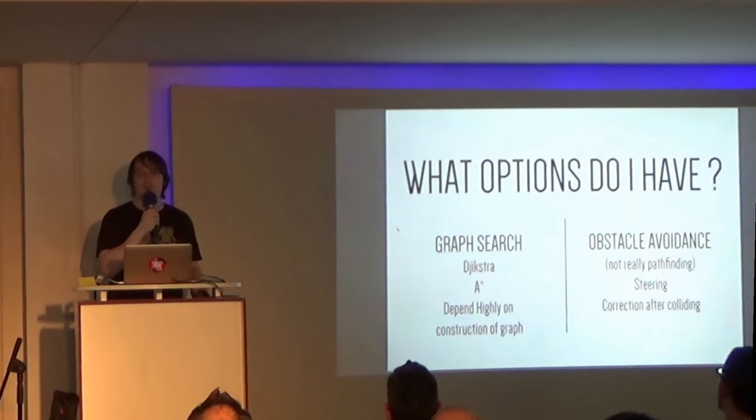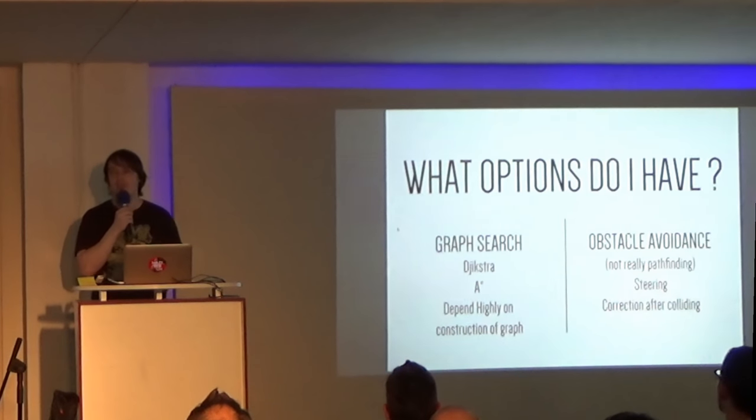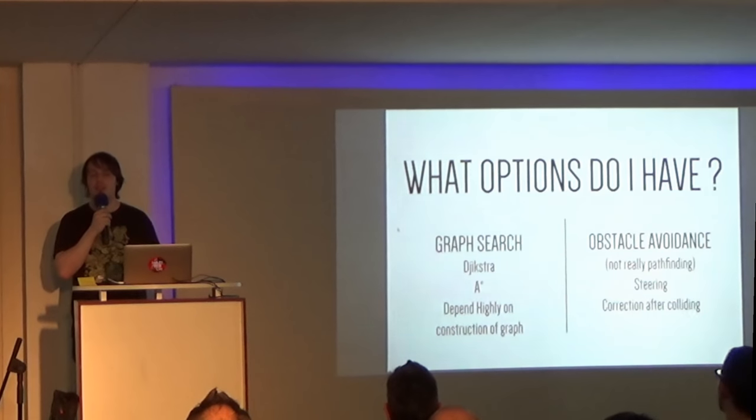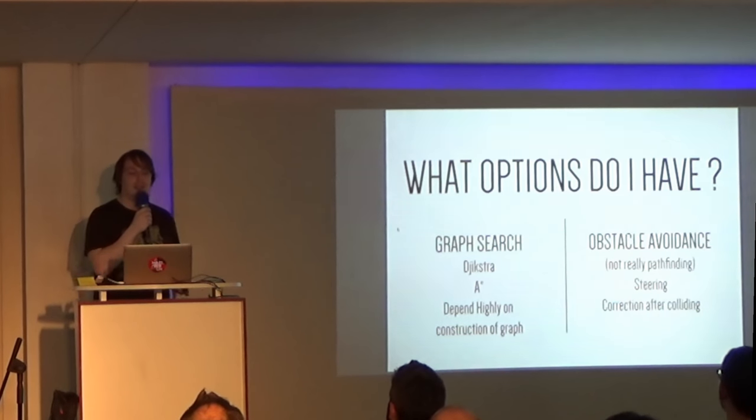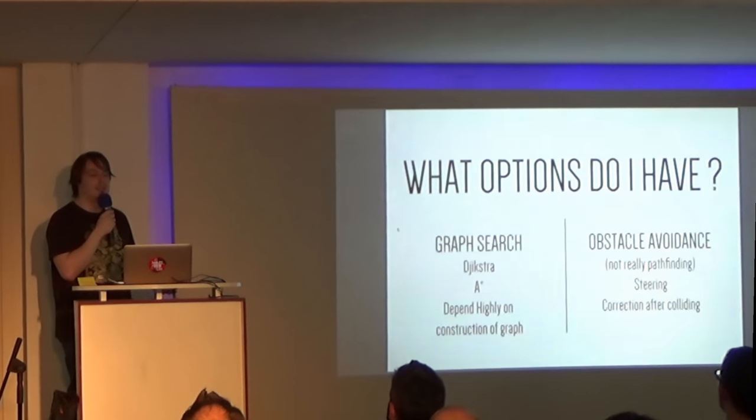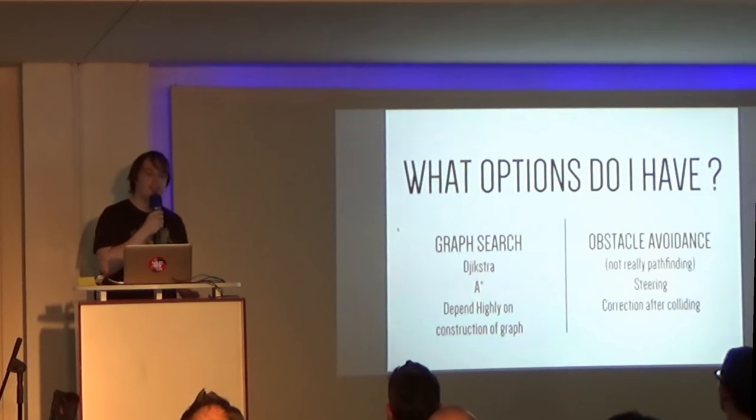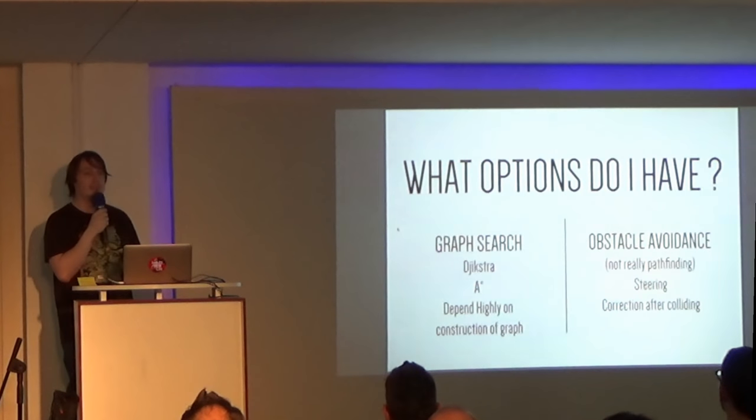Graph search is more useful for strategy games or games with complicated or big geometry in order to avoid them. So, you end up with Dijkstra or A star or B star or any other graph search algorithm, depending on what you need. But, their performance and their usefulness depends highly on the graph you're picking to represent your level.